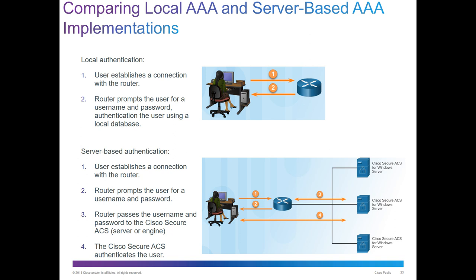Server-based is going to be that option. The user establishes a connection with the router, the router prompts for username and password, and then passes those credentials to a secure device — normally something running like Cisco Secure ACS, whether it be a server, an engine, or some type of directory service for verification. The Cisco Secure ACS will authenticate the user. The ACS is the directory service. The user prompts the router, the router forwards to the Cisco ACS, and the ACS responds with an approved method or not, thus authenticating them or not.